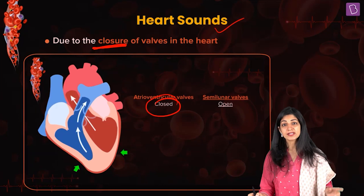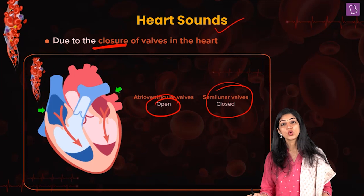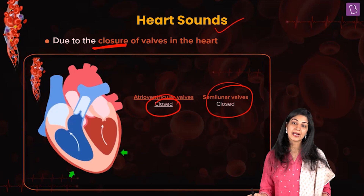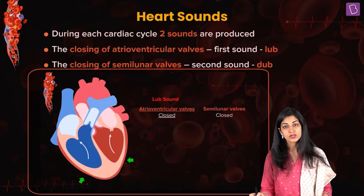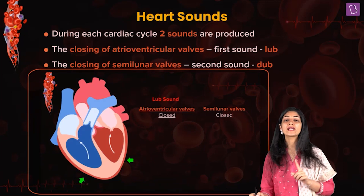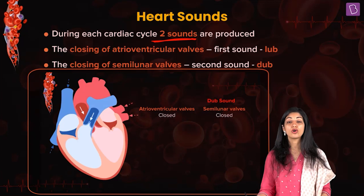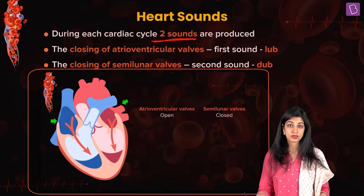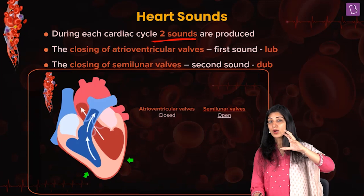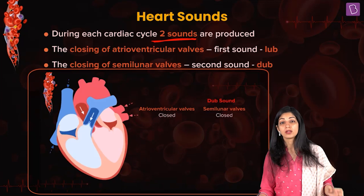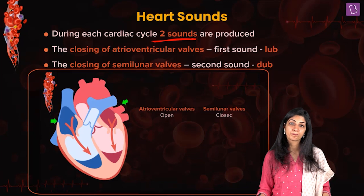The semilunar valves close during early ventricular contraction. Within one cardiac cycle, two sounds are produced — only two sounds. The doctor checks whether these two heart sounds are normal, whether their rhythm, sound, and pitch are all normal.